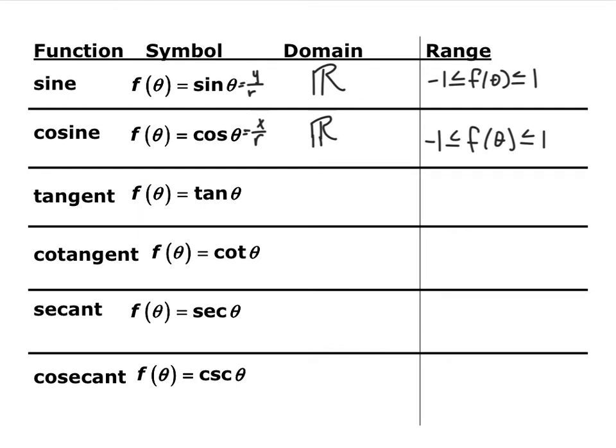Now we're going to talk about the domains and ranges of the six trig functions. The first two are sine and cosine, which share the same domains and ranges. Both of their ratios are over r. Since r is a radius, it's never going to be zero, so the domains are all real numbers. You can plug in any angle theta.